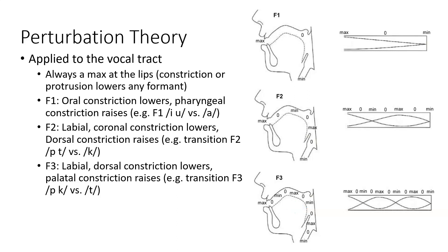In summary, given an articulation — either a constriction or an expansion — the location of that change in the vocal tract has predictable effects on the resulting formant frequencies. Knowledge of these patterns might be useful in guiding coaching for children with articulatory difficulties: if they're producing unexpected formant values, you can try to make adjustments to their articulation to move those formant values toward the appropriate level.